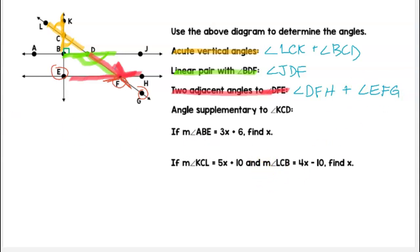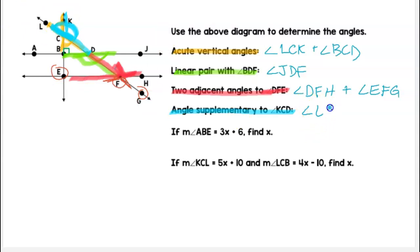Finally for identifying, we have an angle supplementary to KCD. I'm looking for a linear pair angle. I can extend my line in this direction, and that would give me angle LCK. Now there is another angle that is supplementary to KCD if we follow going the other way down the line, so you can go ahead and figure that one out.